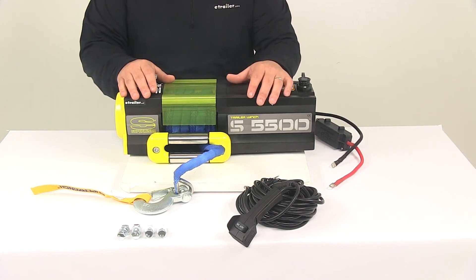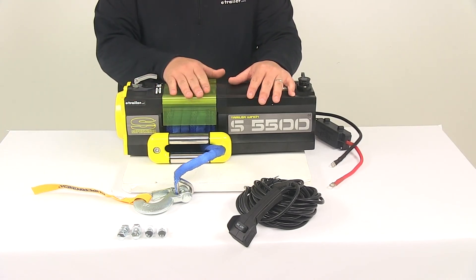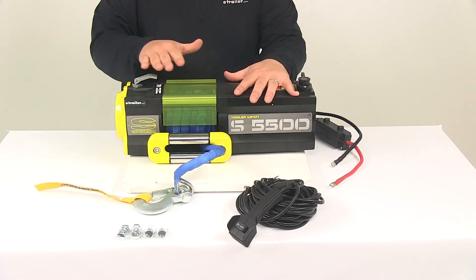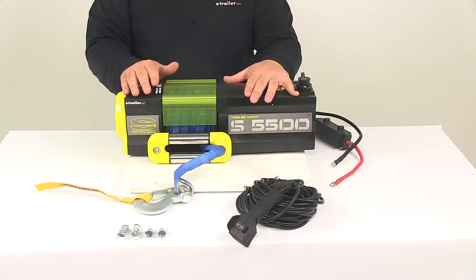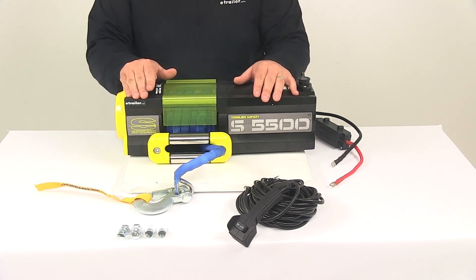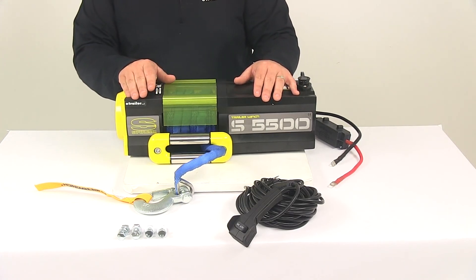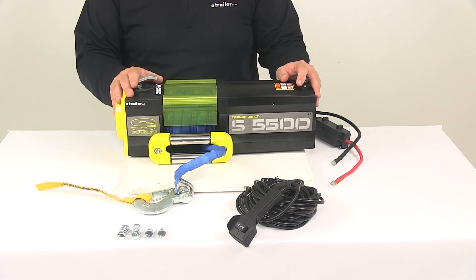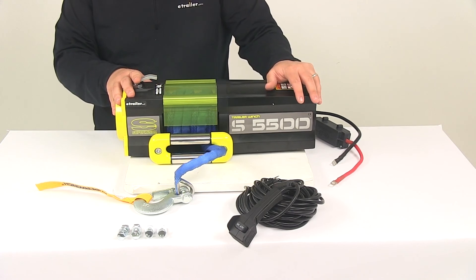With one layer of rope on the drum, this has a pulling capacity of 5500 pounds. With five layers of rope on the drum, the winch has a pulling capacity of 3040 pounds. With no load on the line, the line speed is 24 feet per minute and the amp draw is 50 amps. With max load of 5500 pounds on the line, the line speed is 5 feet per minute and the amp draw is 340 amps. This winch is covered with a limited lifetime warranty and a three-year warranty on the solenoid.